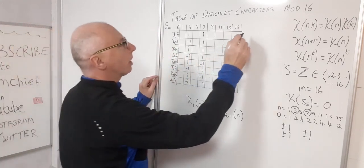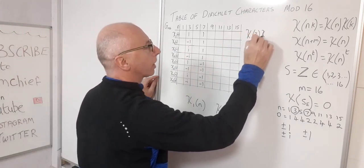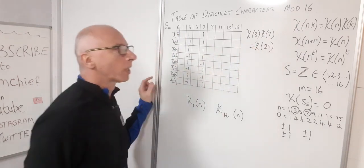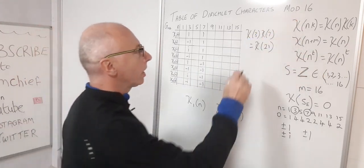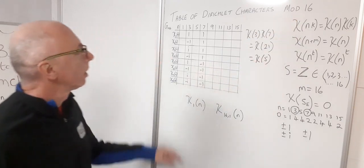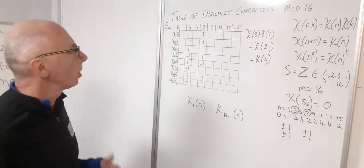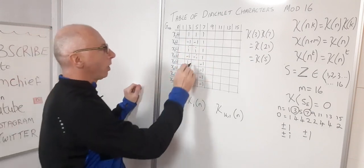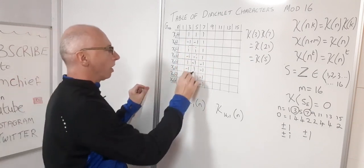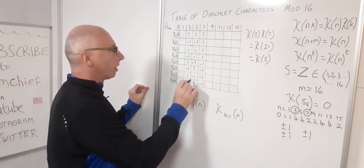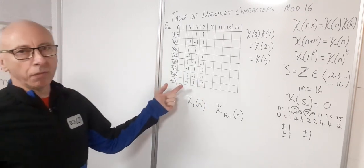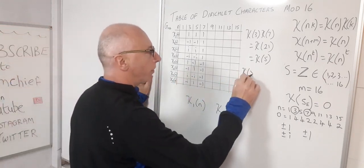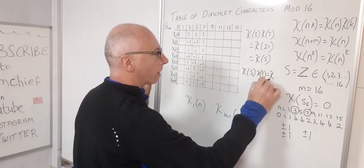Using the multiplicative property, chi(3)×chi(7) = chi(21) and by periodicity modulo 16 that equals chi(5). Multiplying the two columns gives chi(5) values: 1, −1, i, −i, −1, 1, −i, +i.